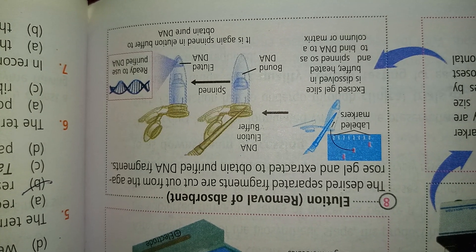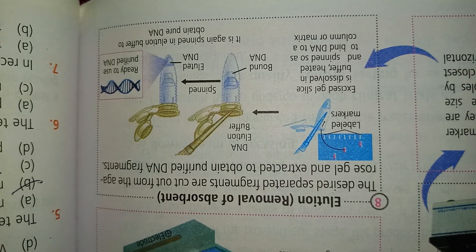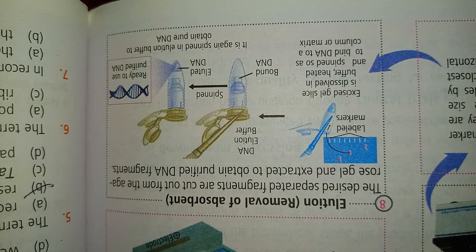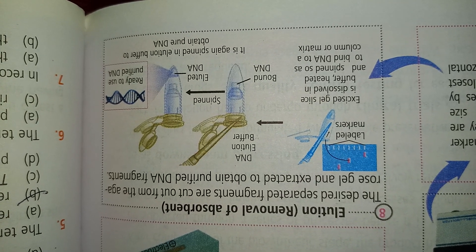Elution: the desired separated fragments are cut out from the agarose gel slice to obtain purified DNA fragments.